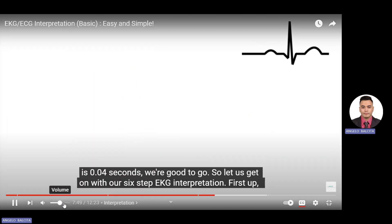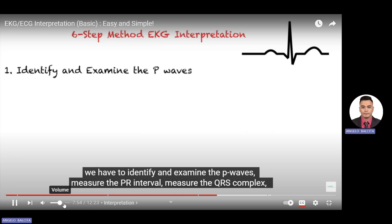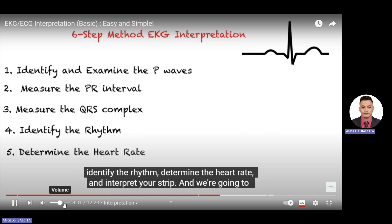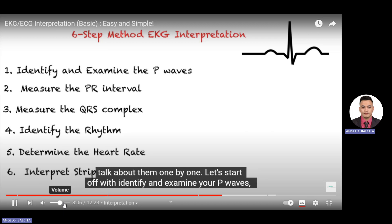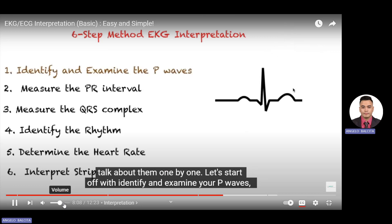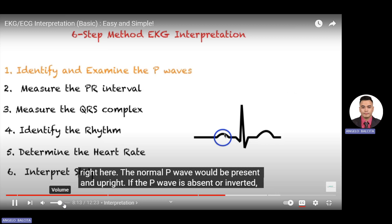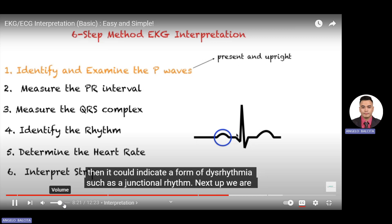Now let's go through our six-step EKG interpretation. Step one: identify and examine the P waves. Step two: measure the PR interval. Step three: measure the QRS complex. Step four: identify the rhythm. Step five: determine the heart rate. Step six: interpret your strip. Starting with step one — the normal P wave should be present and upright. If the P wave is absent or inverted, it could indicate a dysrhythmia such as a junctional rhythm.